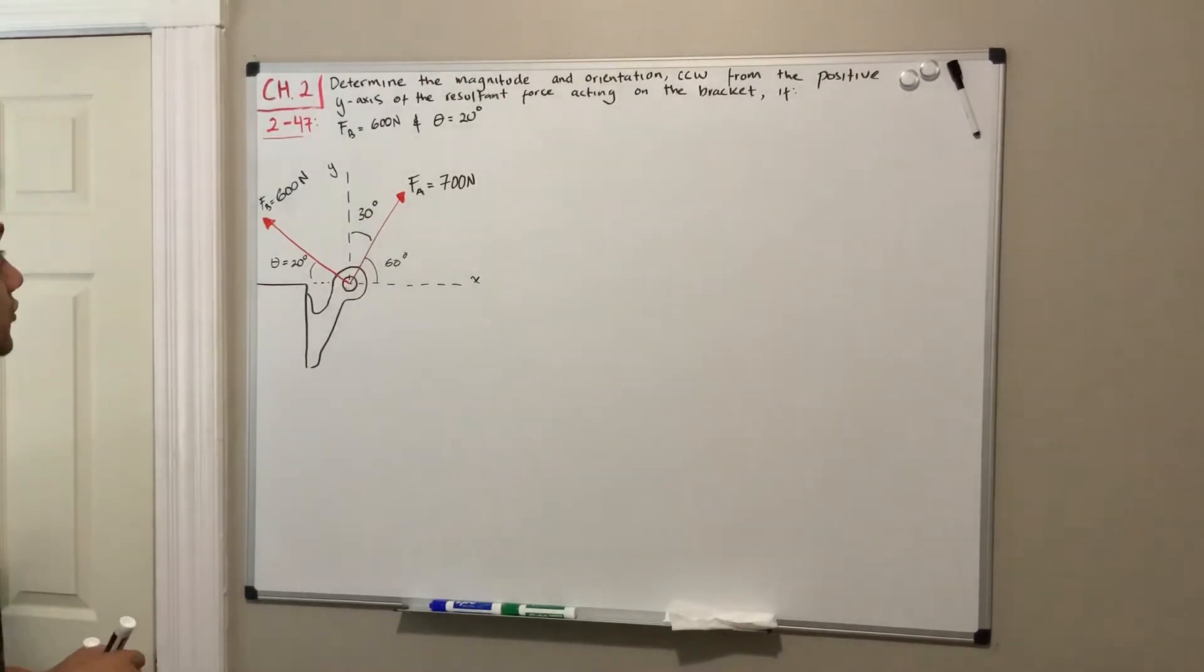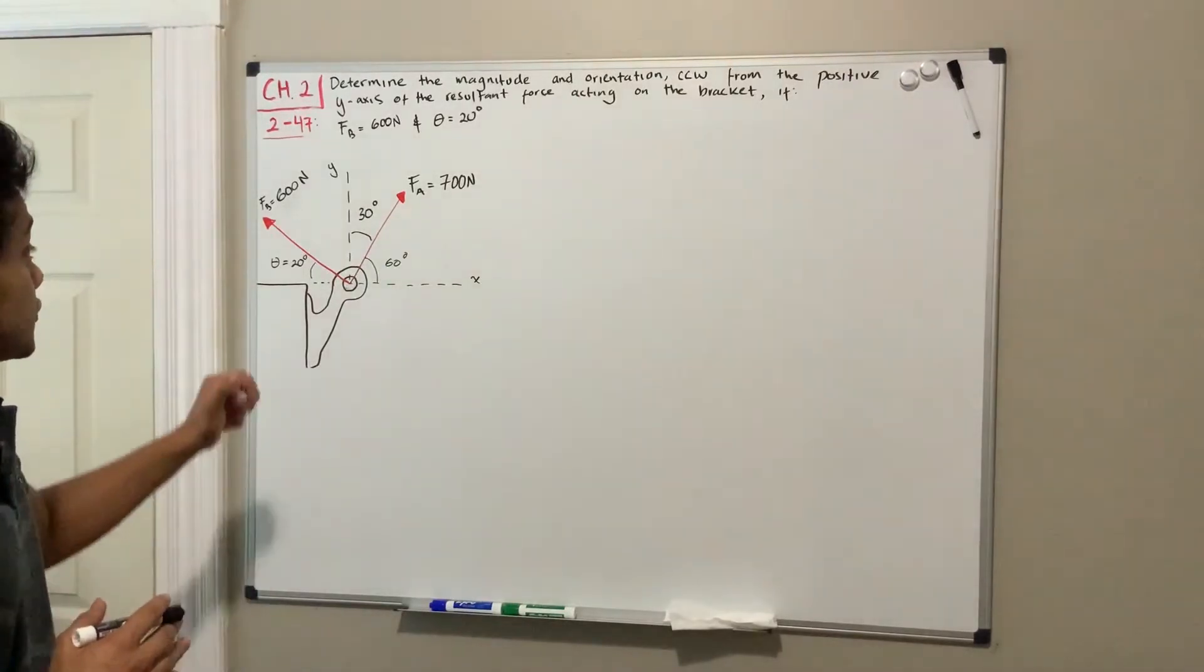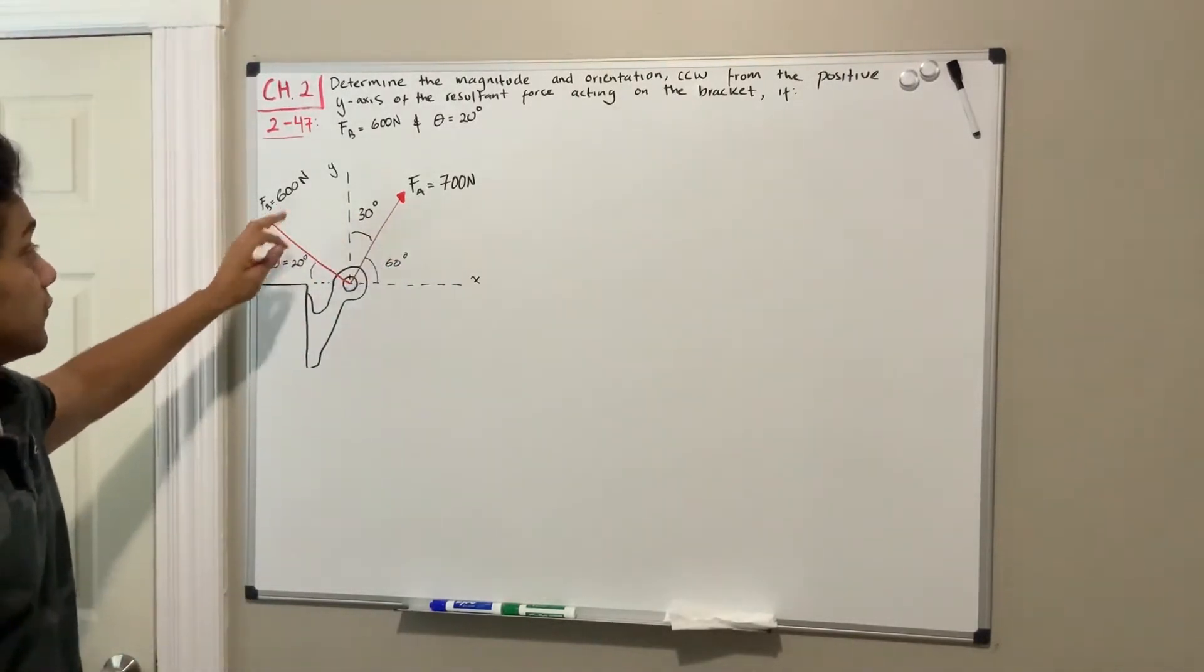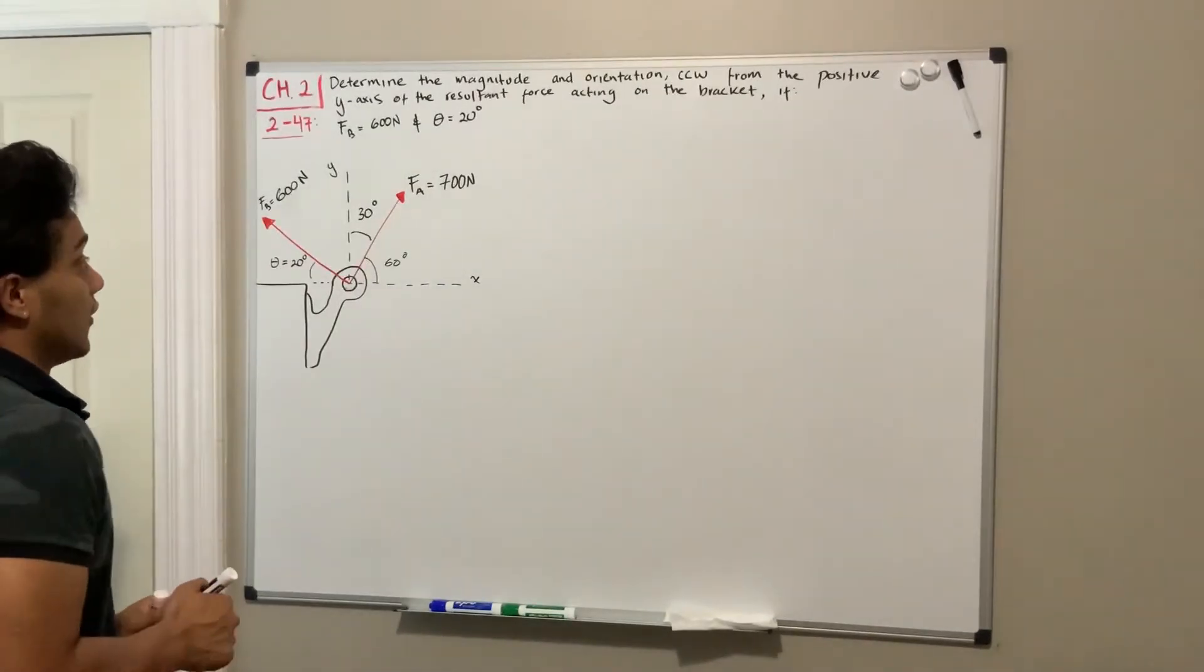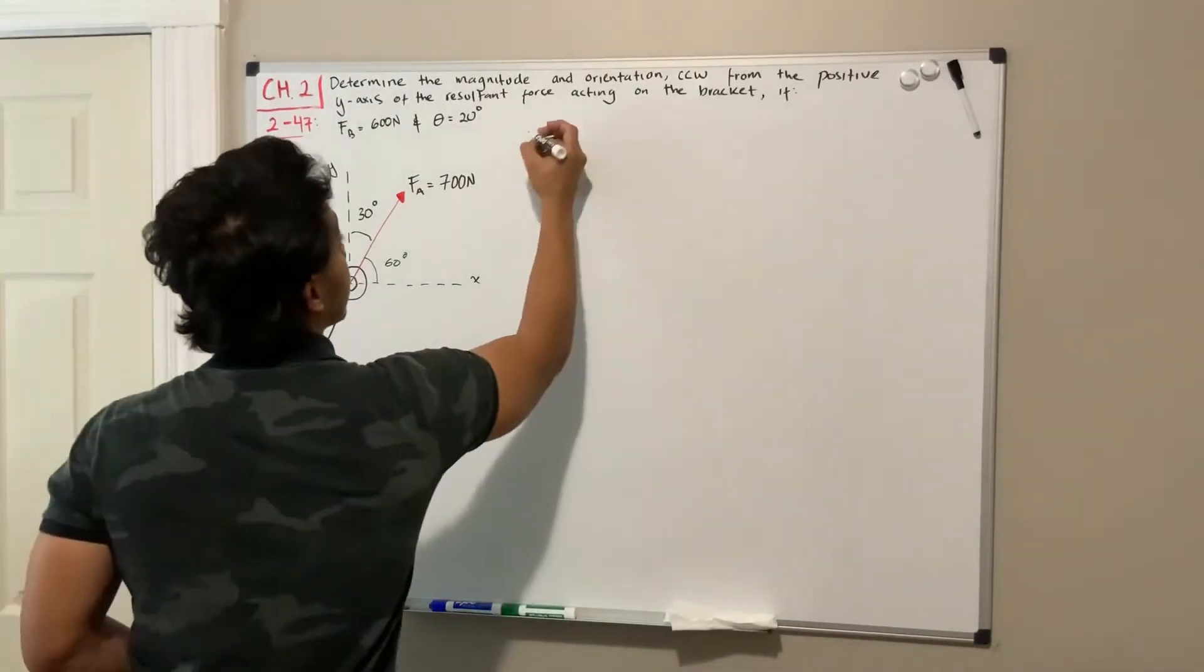So in order to find the resultant force, what I'm going to do is decompose F_a and F_b into its Cartesian vector form. So let's start with F_a.